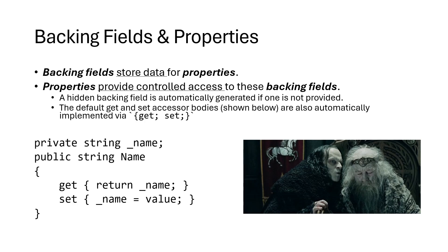What a backing field does is it holds the data that a property is accessing. A property provides access to the data that these backing fields contain. Think of the backing field as having all the information and the property is a gatekeeper that allows us to control how that information is read or changed. By default in C#, a backing field is automatically generated by the language every time you create a property — you just don't see these because the compiler creates them for you, but they do exist in the background.